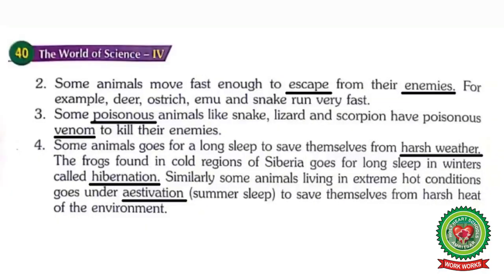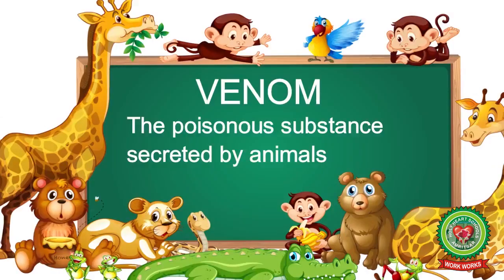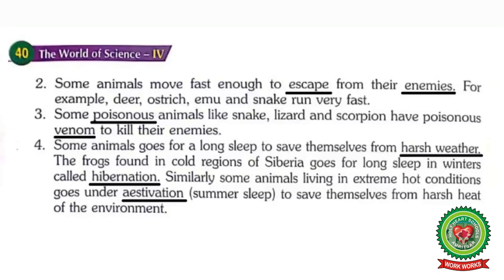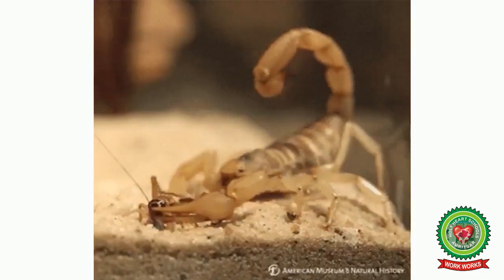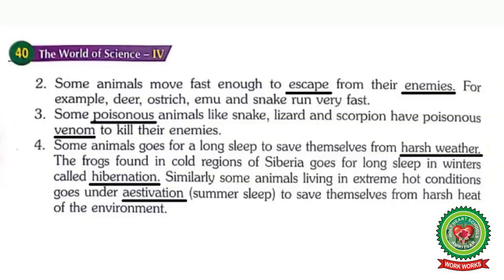Number three: some poisonous animals like snake, lizard, and scorpion have poisonous venom to kill their enemies. Underline 'poisonous' — meaning a substance which causes death. Underline 'venom' — meaning the poisonous substance created by animals. When these animals bite other living organisms, they release a harmful substance called venom into their body, which causes death, and in this way they protect themselves from their enemies.